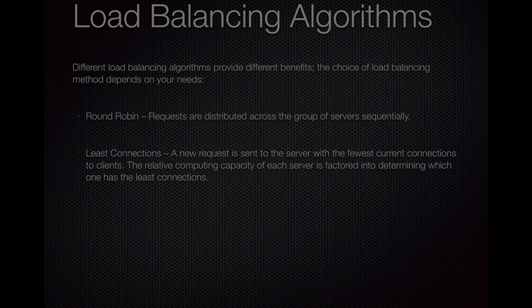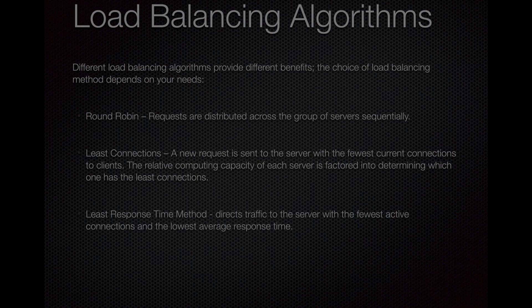The second algorithm is Least Connections. A new request is sent to the server with the fewest current active connections. The relative computing capacity of each server is factored in when determining which one has the least connections, and the load balancer sends the request to that server.